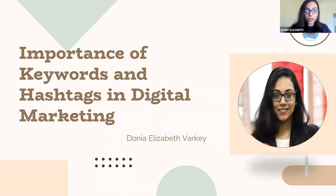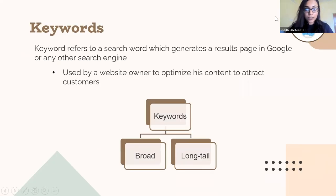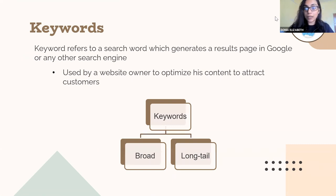To understand the importance of keywords and hashtags in digital marketing, first we need to understand what keywords and hashtags mean. When you try to search something in a search engine, the words you enter in the search bar that generate a result page are known as keywords. A customer or researcher uses them to find results on Google or any other search engine, while a website owner uses them to optimize content and attract the right target customers to their website.